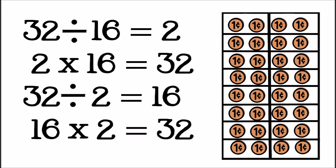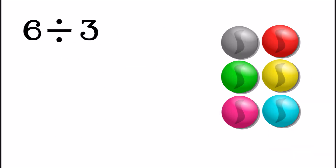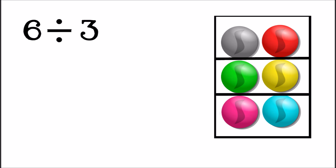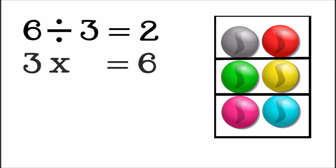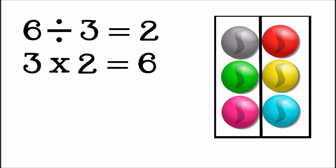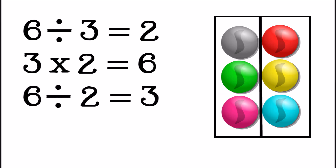Let's look at one more problem: six divided by three. If we divide six things into three equal groups, each group will only have two things in it. Six divided by three is two. We can check that by looking at the related multiplication facts — three times what equals six? Two. Three times two equals six, so six divided by three equals two. We can divide six by two as well: six divided by two equals three.